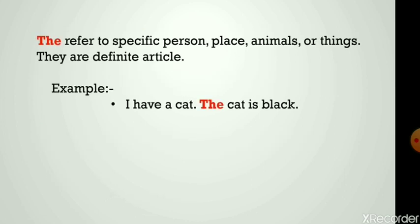Next comes 'the.' The refers to specific persons, places, animals, or things. It is a definite article. For example: I have a cat. The cat is black.